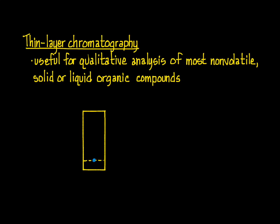In TLC, a small amount of a mixture is spotted onto a glass, plastic, or aluminum plate that has been coated with a very thin layer of the stationary phase material. Most commonly, this is silica gel.